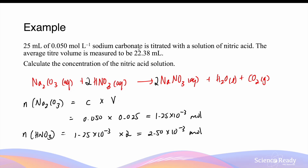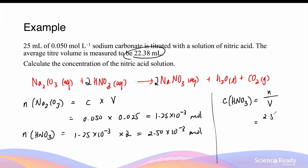This corresponds to the titer volume of 22.38 millilitres, or 0.02238 litres. We can use the volume and the moles to calculate the concentration of nitric acid, which is equal to the moles divided by the volume. The moles is 2.5 × 10⁻³ divided by 0.02238 litres, giving 0.11 mol per litre.